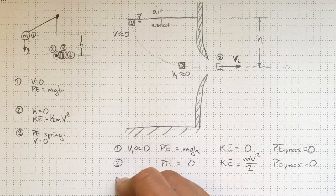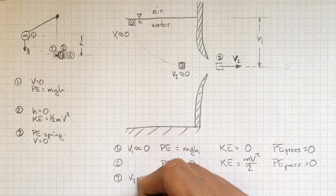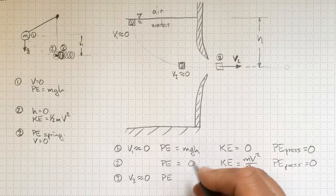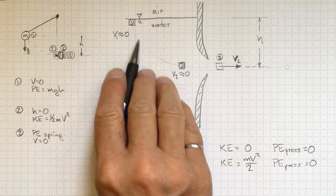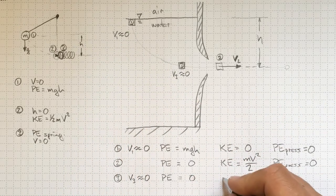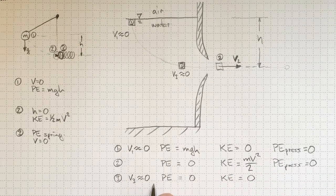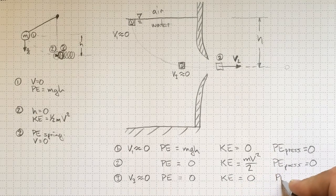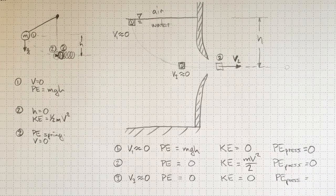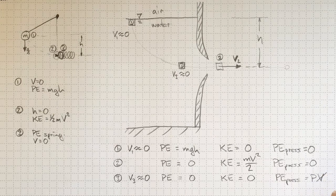At location three in between those two, v3 still about equal to zero. The potential energy of elevation, the one that we're used to thinking of, is now down to zero because we're at our datum point. And the kinetic energy is also equal to zero because we're hardly moving. And the potential energy of pressure is equal to the pressure times the volume of the little chunk of fluid.